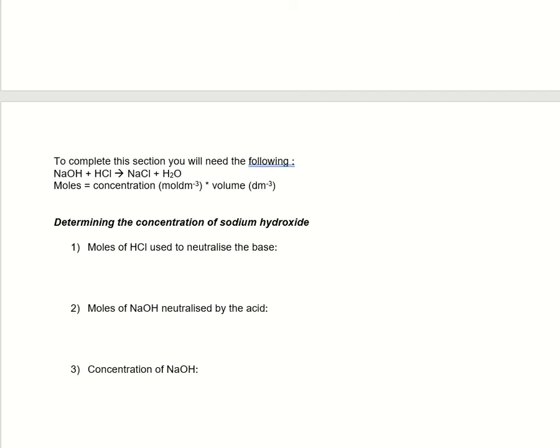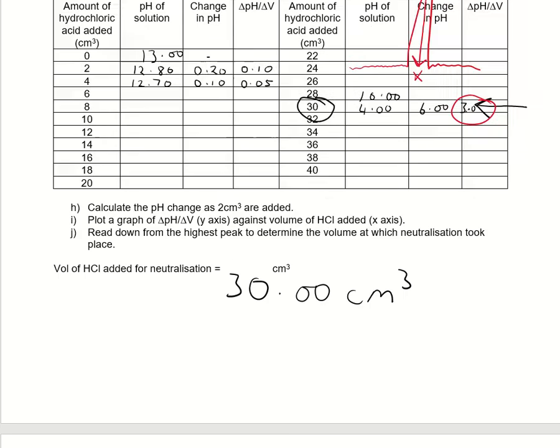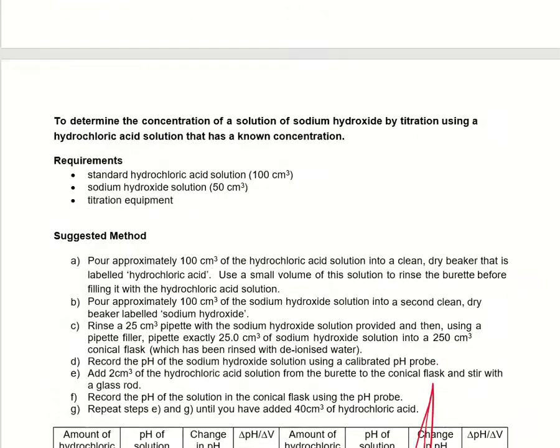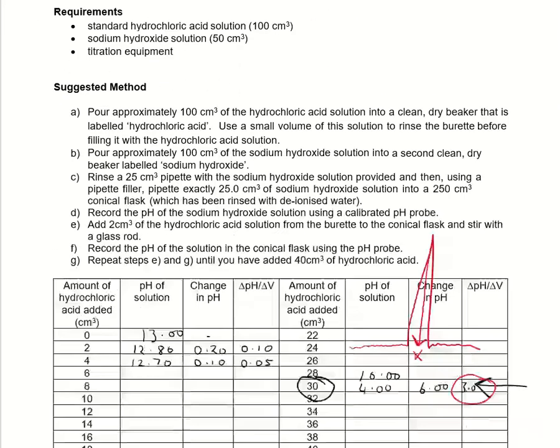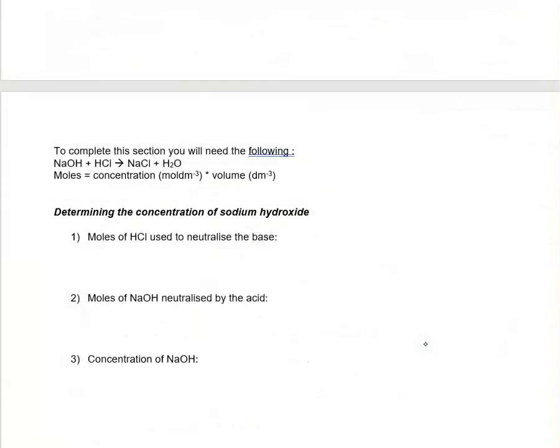So first off, the number of moles of HCl used to neutralize the base. Again, concentration times volume. If we remember, 0.502, and then the volume which we've just seen there, in my case I've just made it up, 30 over a thousand. Always remember this please: cm³ divided by a thousand gives us dm³. So 0.502 times 0.03, 0.01506.